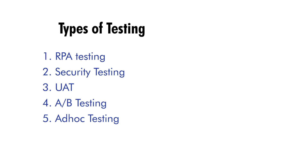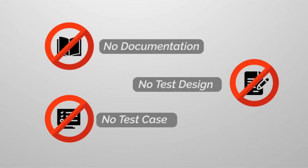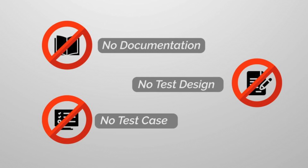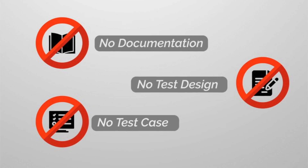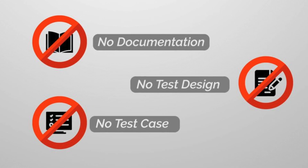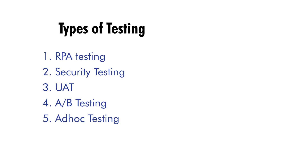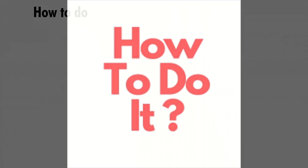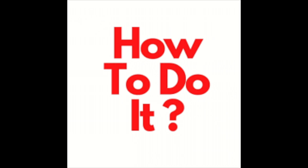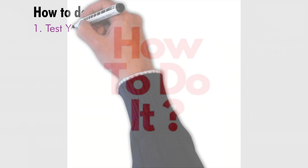Next is ad hoc testing — an informal, unstructured software testing type performed to see if any loopholes or bugs are present in the chatbot. This type aims to find any possible defects or errors in the bot's performance. Now let's see how to do these kinds of testing.